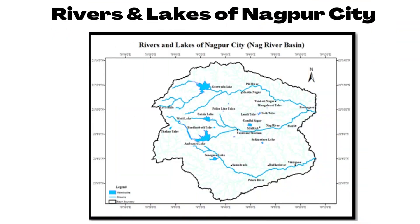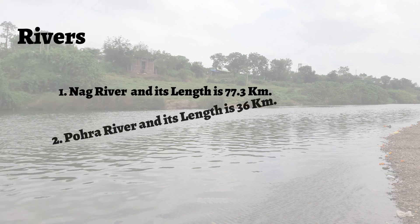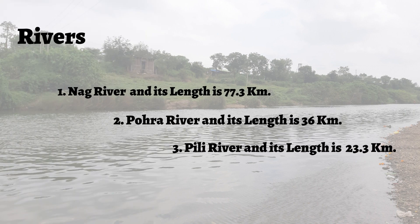Nagpur city has three rivers: Nag River (77.3 km), Pili River (23.3 km), and Pohara River (36 km). It is clearly visible from the map that these rivers originate from Lava Hills located near Ambazari Ordnance Factory, Amravati Road, Nagpur.